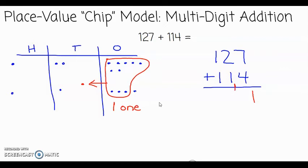Now I am going to the place value chart to add the tens. I count one, two, three, four tens. Looking at the algorithm in the tens column, I see two plus one plus one, which gives four tens.